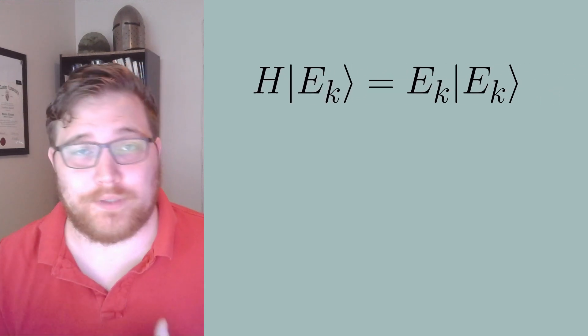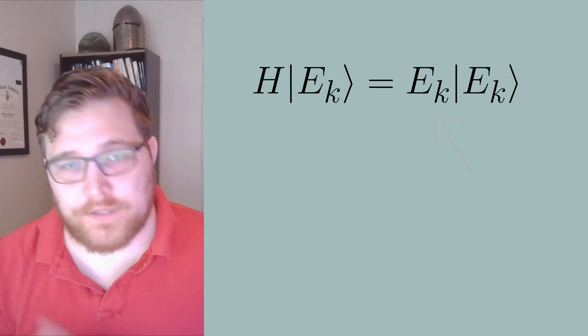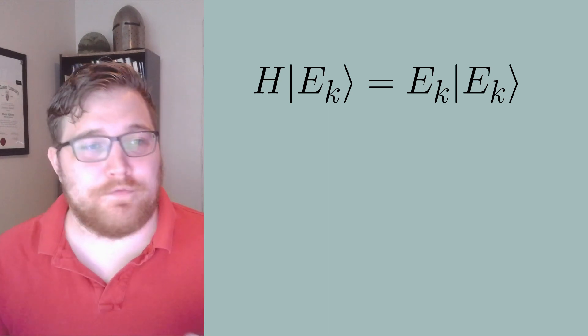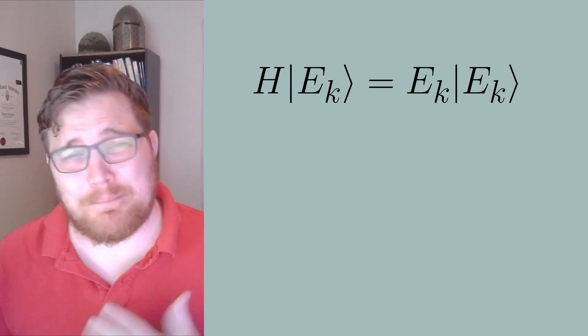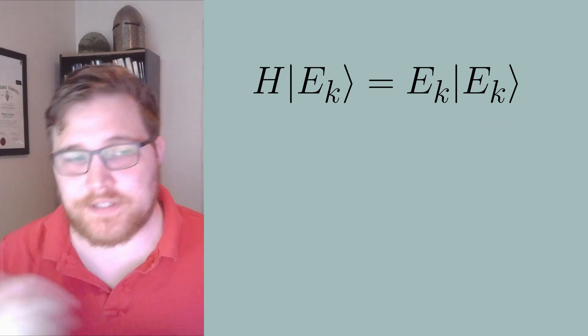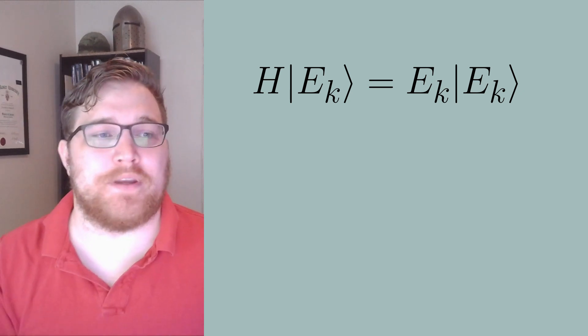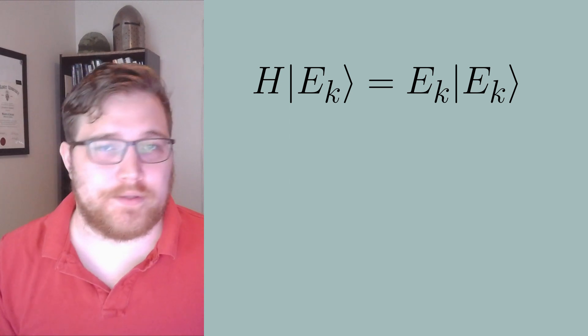For starters, we will isolate our discussion to closed isolated systems with finite volume and we will describe our system with some Hamiltonian H such that the energy eigenstates and energy eigenvalues are given by the following expression. We will assume our spectrum is discrete but potentially has an infinite number of accessible energies. For the remainder of the video, to keep things simple, when we say microstates we are referring to these energy eigenstates. The reason we isolate ourselves to these conditions is for one it's easy to resolve the controversy, and two we can supplement our discussion with other resources on this channel.